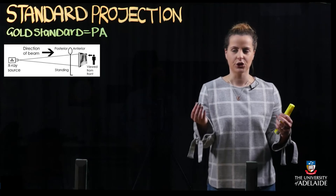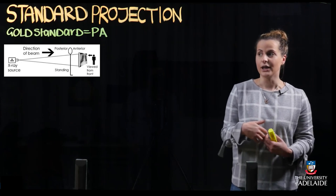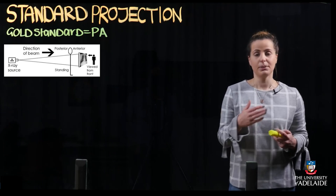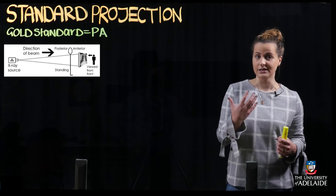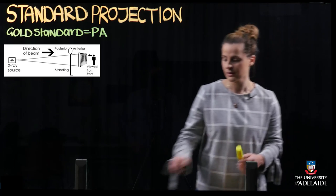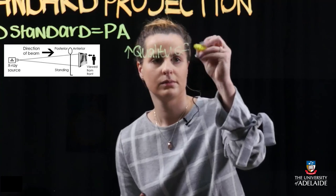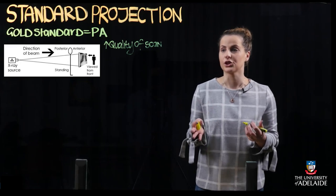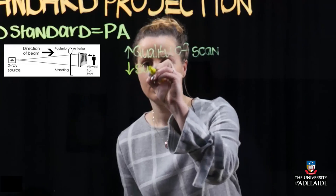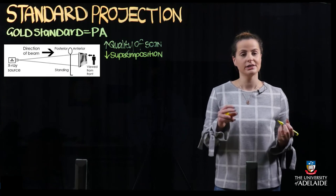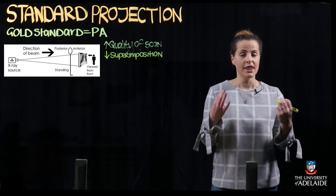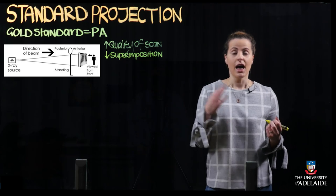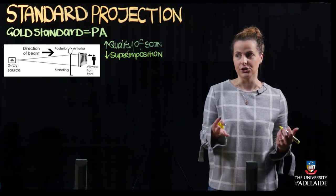In a PA projection, the anterior structures of the body are going to be the closest to the film detector. This is gold standard because firstly you're going to see increased quality of scan, secondly less superimposition of the posterior structures, and most importantly a more accurate representation of heart size as well as mediastinal borders, due to less magnification associated with these anterior structures.